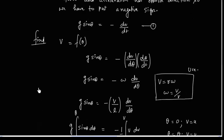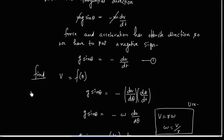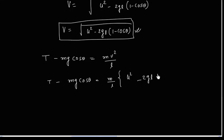We have to also find tension as a function of theta. So we can use this expression. Now we know the value of v, so let us plug here. So v is under root, so we can have square.